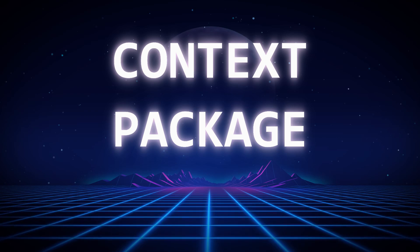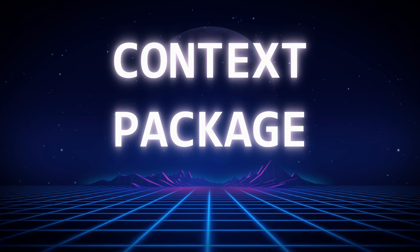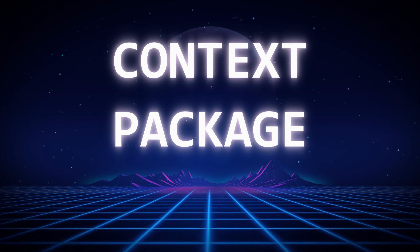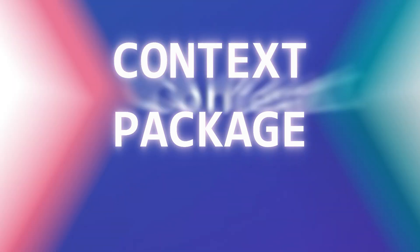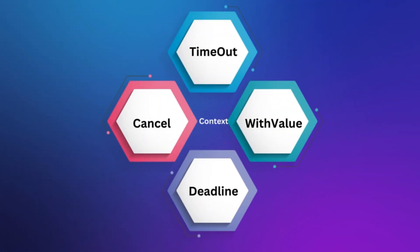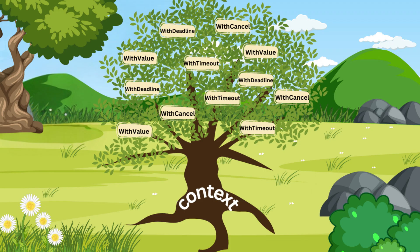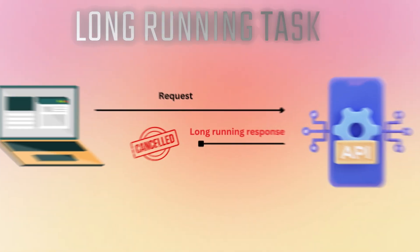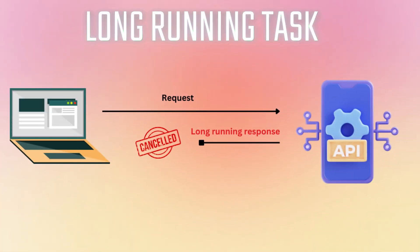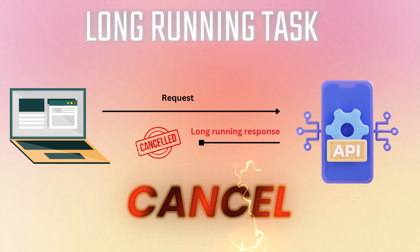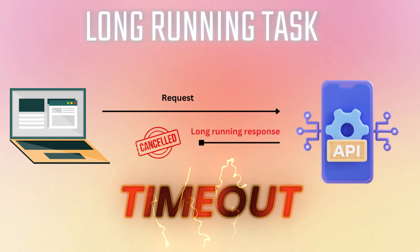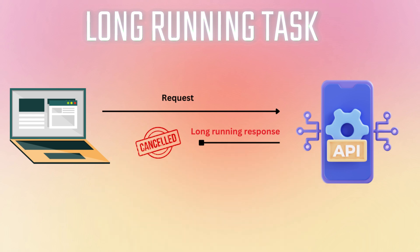In this video we'll understand the Go language context package with very simple examples. The context package very efficiently handles cancellations, timeouts, and passing data between goroutines. If we have a long running process and we want to cancel it in between, or we want to time it out, we can use context. The difference between timeout and deadline is very small, which I will show while doing the program.